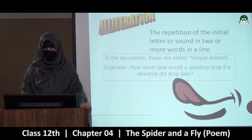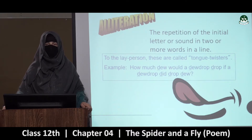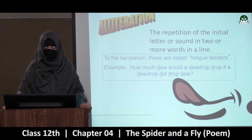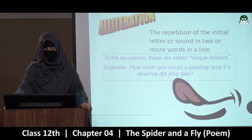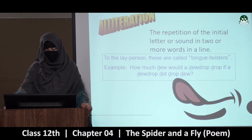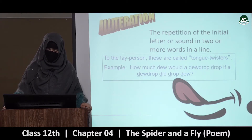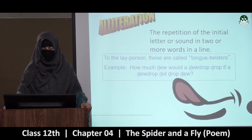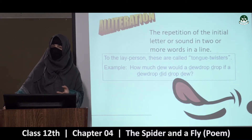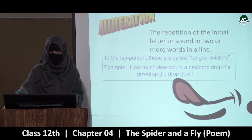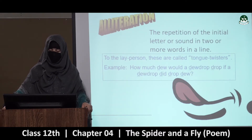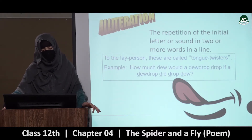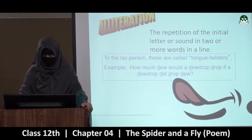To the lay person, these are called tongue twisters — waise zyada tar log, aam aadmi jo hai, woh inko tongue twisters kehte hain. Lekin yeh asal mein alliteration hoti hai. Example: 'How much dew would a dewdrop drop if a dewdrop did drop dew?' Woh jo initial letter hai uski repetition jo hai woh alliteration kehlati hai ek line mein.